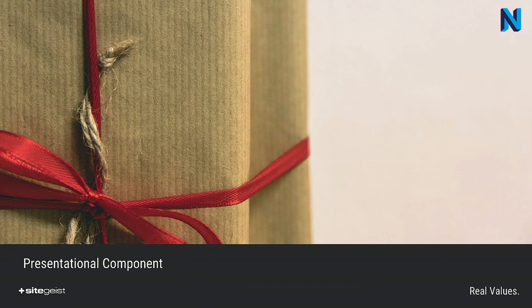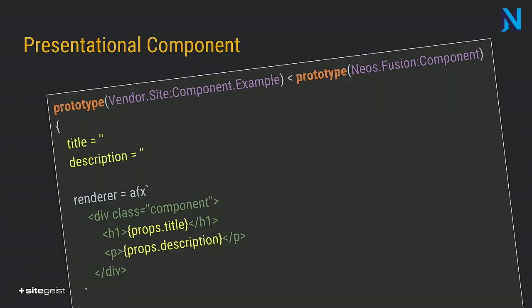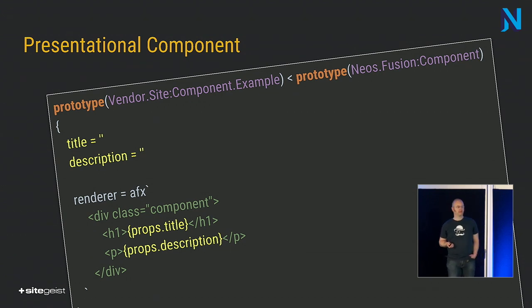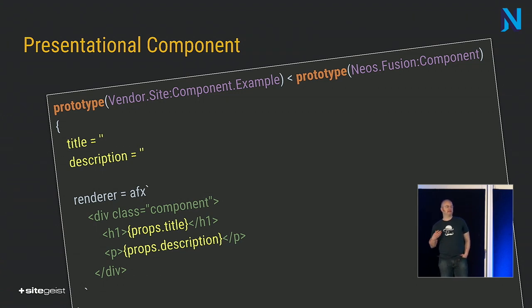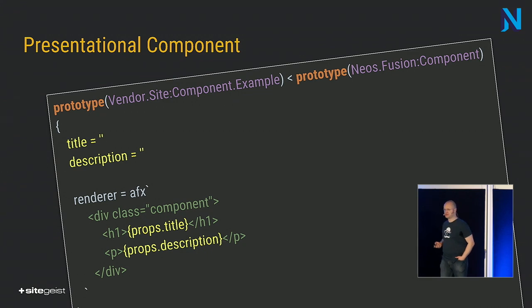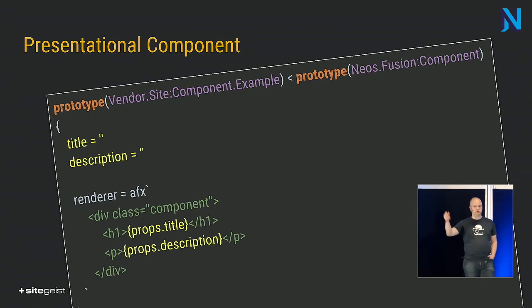The single most important pattern on the presentation side is the presentational component. A presentational component isolates the visual aspects for the rendering of a data structure — this includes all aspects: markup, styling, and scripts. A presentational component has two main parts: the API, which is the data the component expects, and the renderer that defines what the component will output. The data passed via API can be used in the renderer as props — best understood as movie props: the thing you give an actor when he enters the stage.